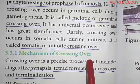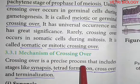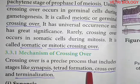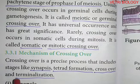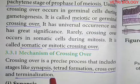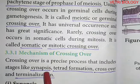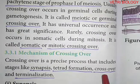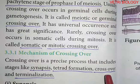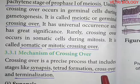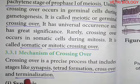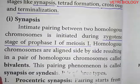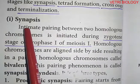Mechanism of crossing over. Crossing over is a precise process that includes stages like synapsis, tetrad formation, crossing over, and terminalization. Synapsis is the pairing of two homologous chromosomes; tetrad formation produces four chromatids; then actual crossing over occurs; and finally terminalization completes the process.